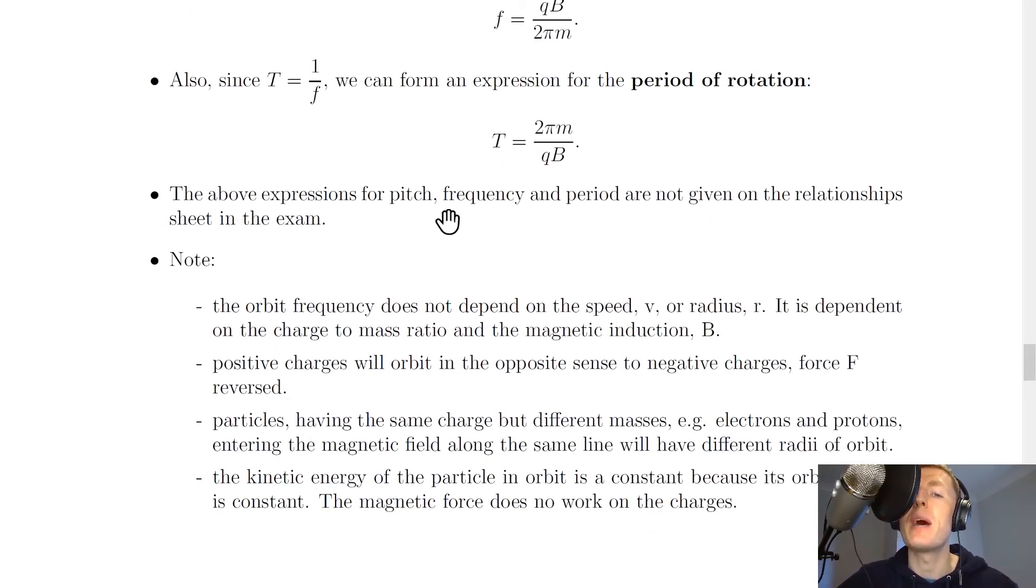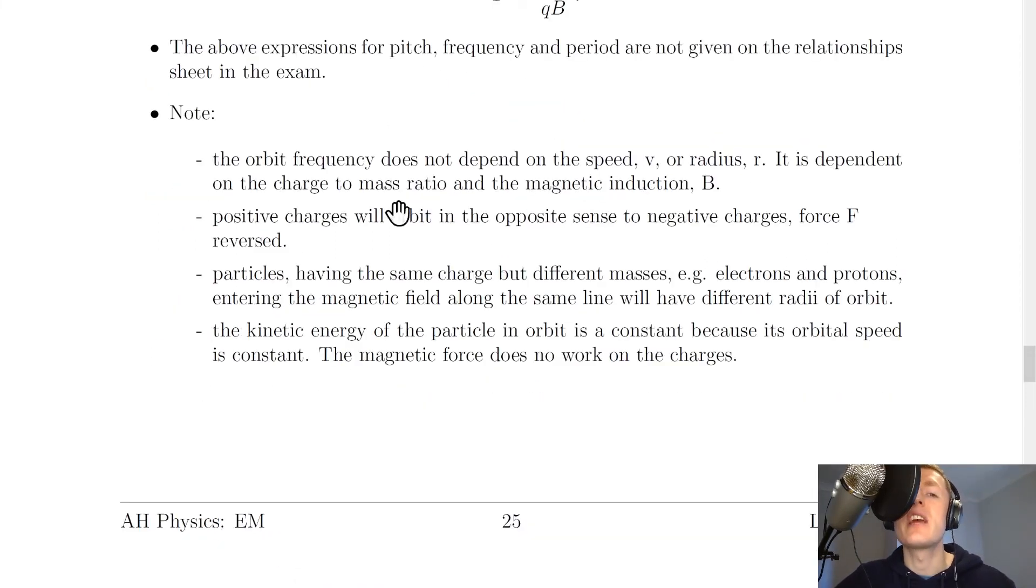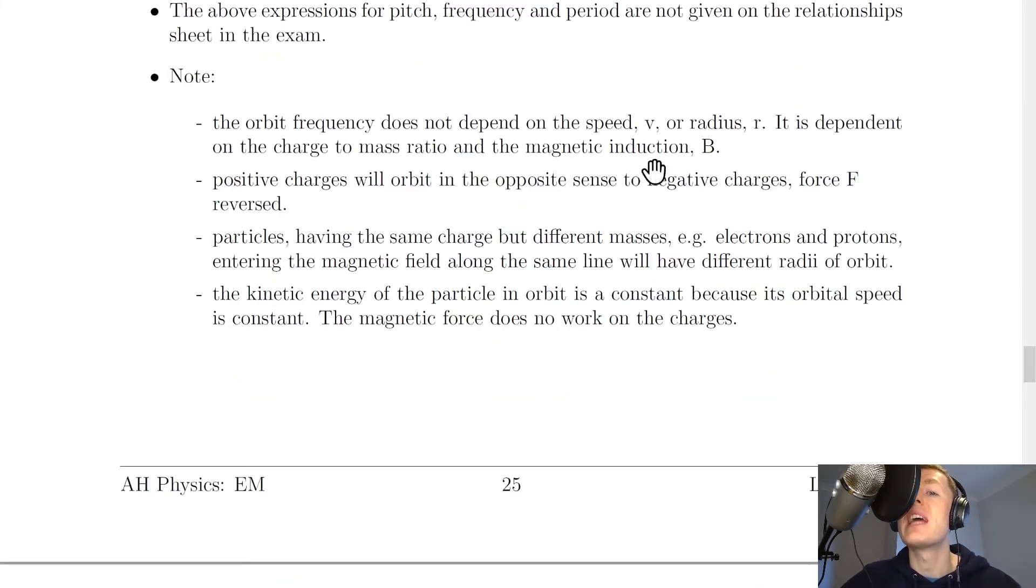It then says the above expressions for pitch, frequency, and period are not given on the relationship sheet in the exam. So it's a good idea to be able to manipulate these expressions to get the frequency and the period. Lastly, it says to note that the orbit frequency does not depend on the speed v or radius r. It is dependent, however, on the charge to mass ratio, which is this q over m, and the magnetic induction B.